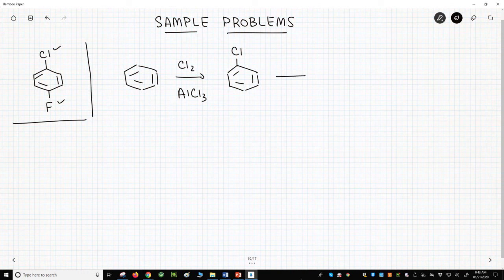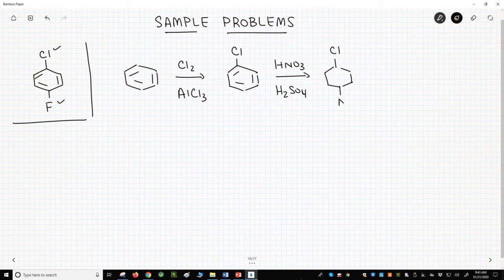That group will need to be a nitro group in order to set up the diazonium chemistry. So we'll treat the ring chlorine with HNO3 and H2SO4. To be careful with the chlorine, let's reduce the nitro with SnCl2 and HCl in ethanol.